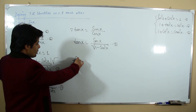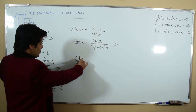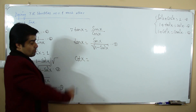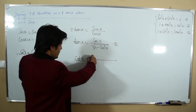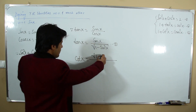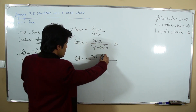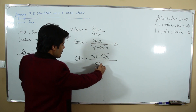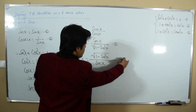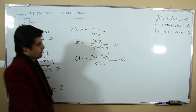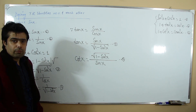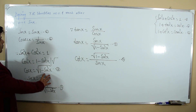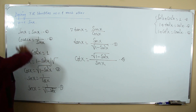Cotangent is the reciprocal of tangent, so cotangent with respect to sine is √(1 - sin²x) / sin x. This is our sixth relation. We have proved all six relations with respect to sine.